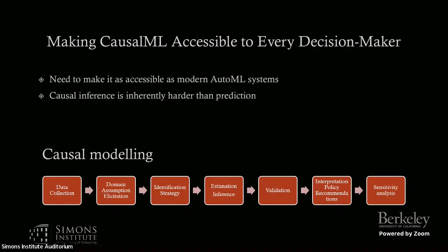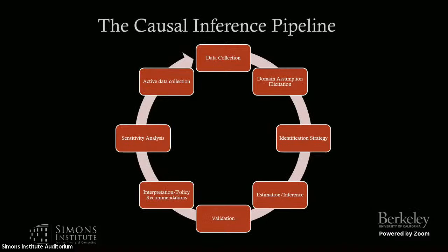Because there's no perfect analog of out-of-sample validation for causal inference, the ultimate analog is active data collection — experimentation. The causal inference pipeline is really a loop where you have data, elicit assumptions, devise some identification strategy, do estimation and inference, maybe do some validation given the assumptions if you want to do model selection, recommend some policies, perform sensitivity analysis of how these policies would change if those assumptions are violated, and maybe recommend to the decision maker to run some experiment that will better inform the conclusions. These are all of the components that we need to automate if we really want to move to an automated causal machine learning system, in the same manner that people are currently using automated machine learning systems.